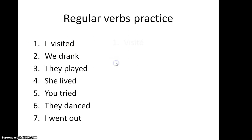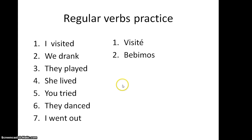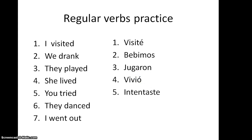Number one: Visité — I-ending here. Number two: Bebimos — we-ending here. They played: Jugaron. She lived: Vivió — and he lived has the same ending as well. You tried: Intentaste — could also have 'trataste de' if you used that instead. They danced: Bailaron. And Salí, which is the verb to go out.